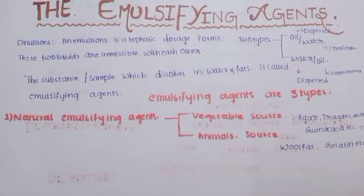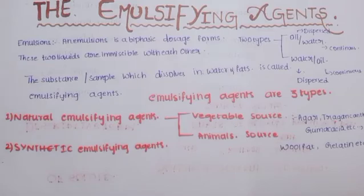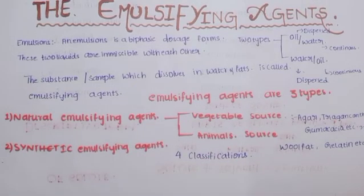The second type is synthetic emulsifying agents — nothing but man-made, artificial. Synthetic emulsifying agents have mainly four classifications: first is anionic, second is cationic, third is non-ionic, and fourth is inorganic.